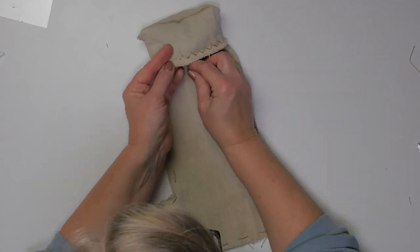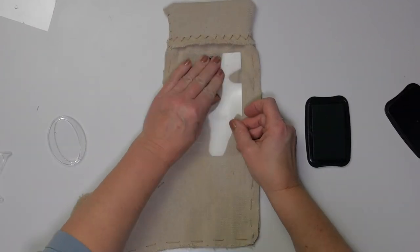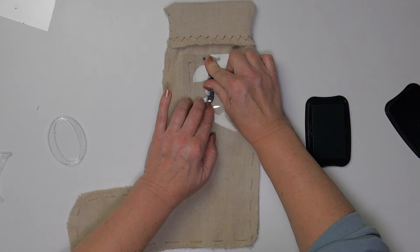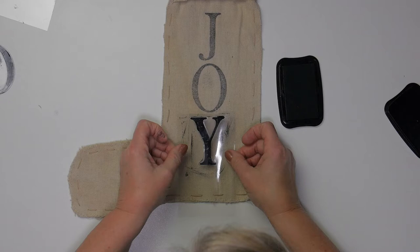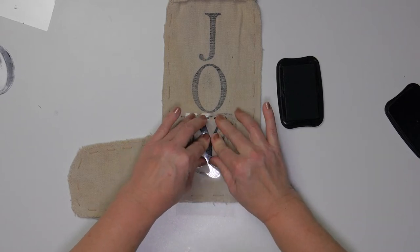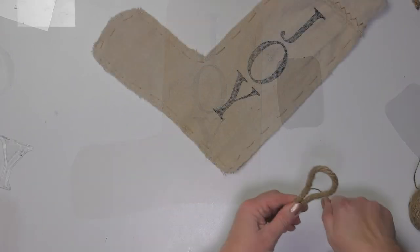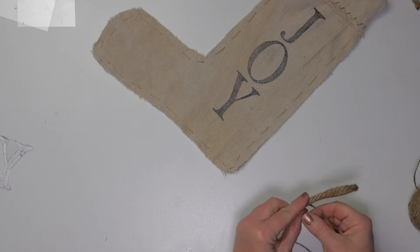For the stamps, I'm using the IOD Type Setting stamp, and I'm just going to stamp a simple 'Joy' on the stocking. I then take this thicker roping that I got at the Dollar Tree.